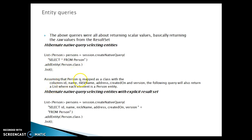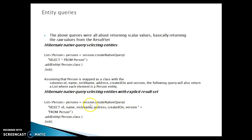Assume the Person class has columns id, name, nickname, address, created_on, and version. The query will return a list where each element is a Person entity. Instead of SELECT *, you can explicitly list all column names separated by commas — both approaches work. However, if you select only some columns — for example omitting version — you are selecting a partial object, and Hibernate will throw a ClassCastException. You must select all columns or use SELECT *.